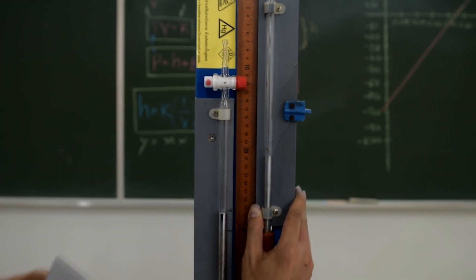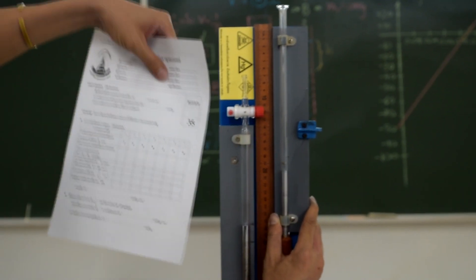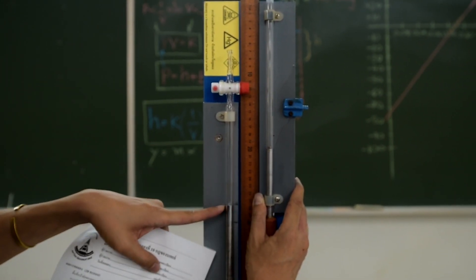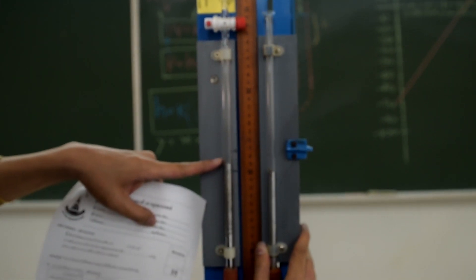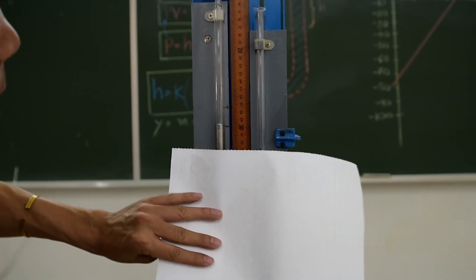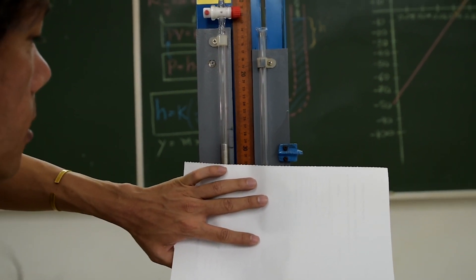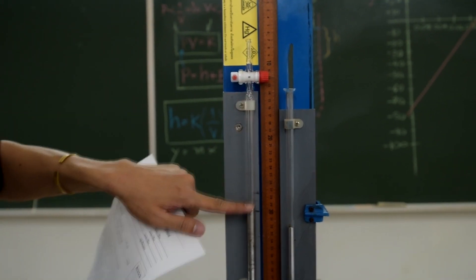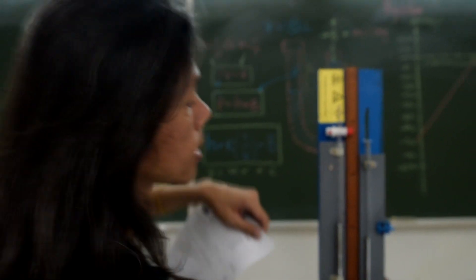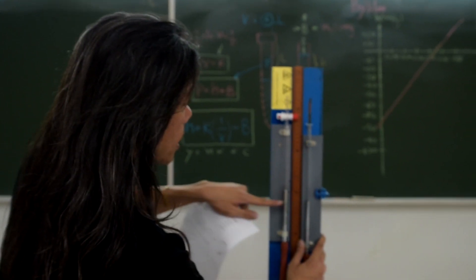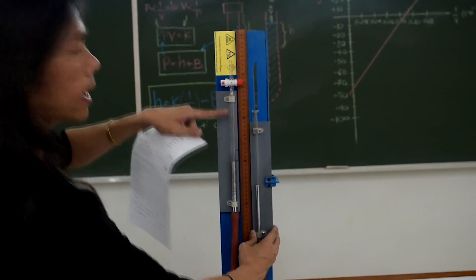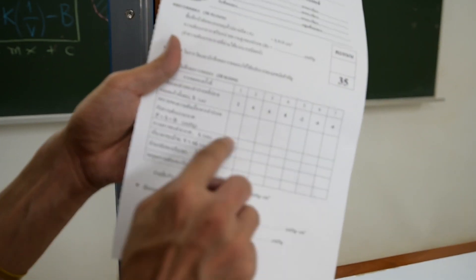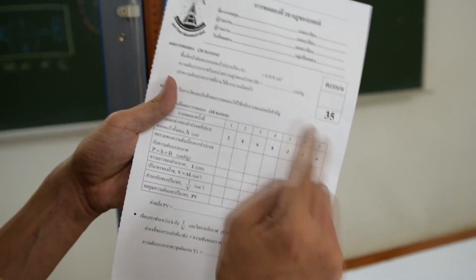We also have negative values: minus 2, minus 4, and minus 6 centimeters. For negative values, we do the opposite — adjusting the mercury level on the right to be lower than the left. For minus 2 centimeters, move the mercury on the right down until it is 2 centimeters lower than the left tube. After that, measure length L from the mercury on the left tube to the edge of the tap. Then calculate V, 1 over V, and P times V using the same method. P equals H plus B, where B is read from the barometer. Adjust to minus 2, measure L; adjust to minus 4, measure L; and so on.